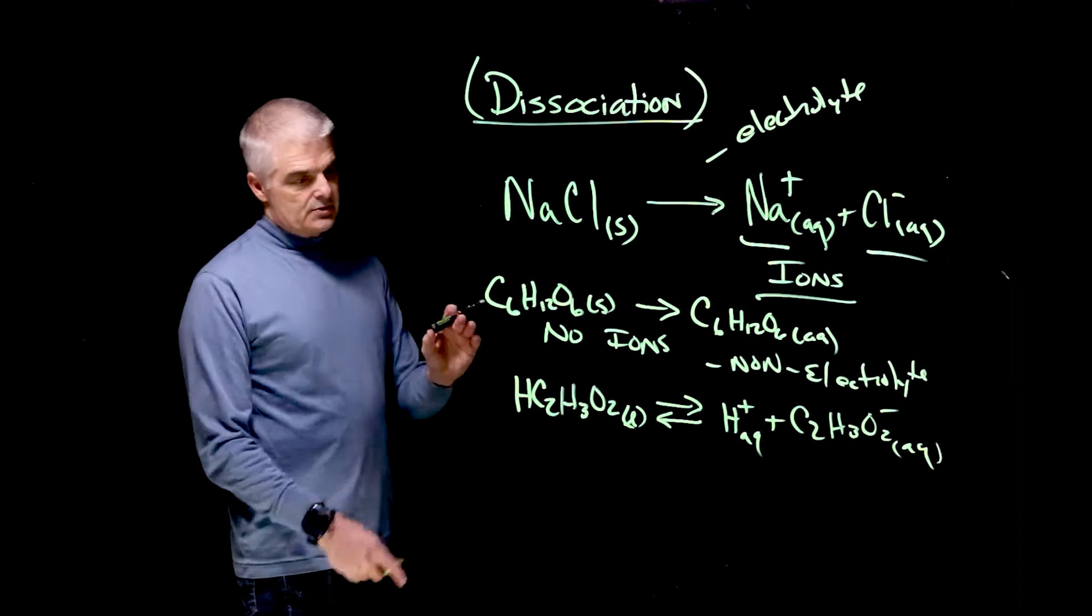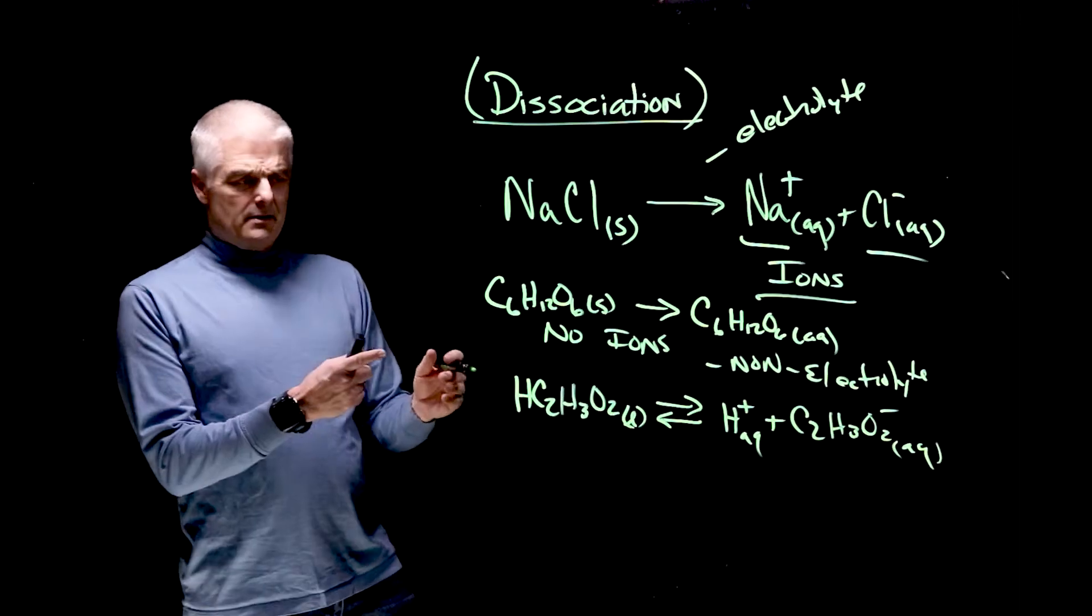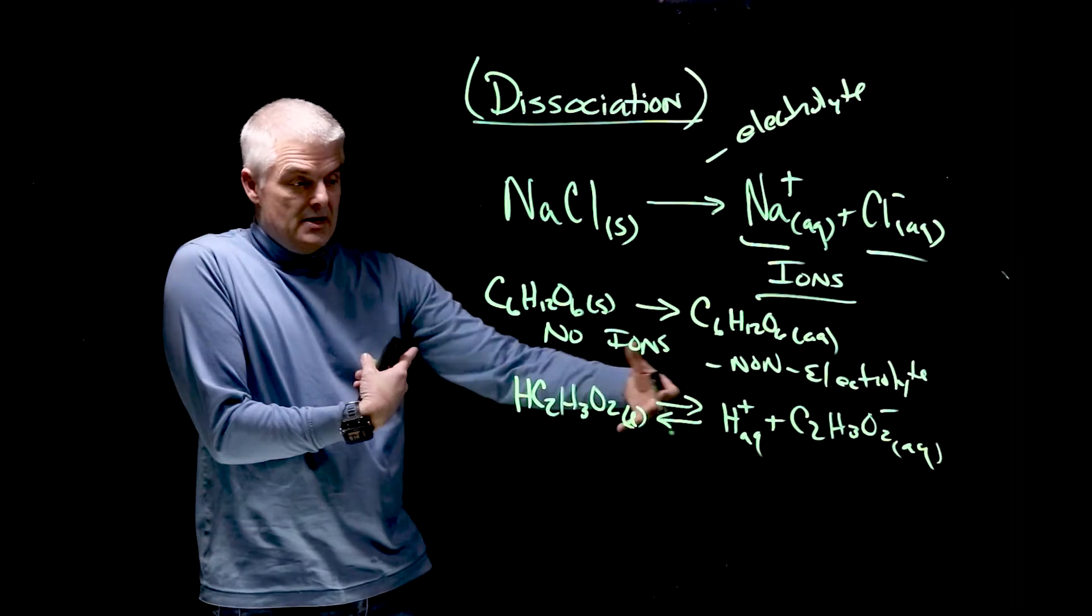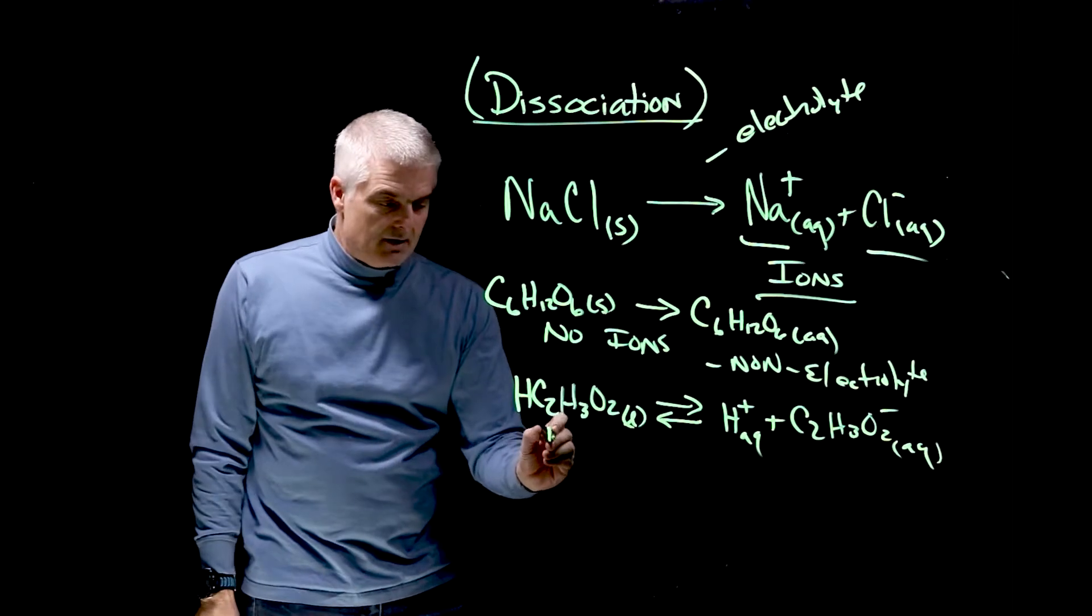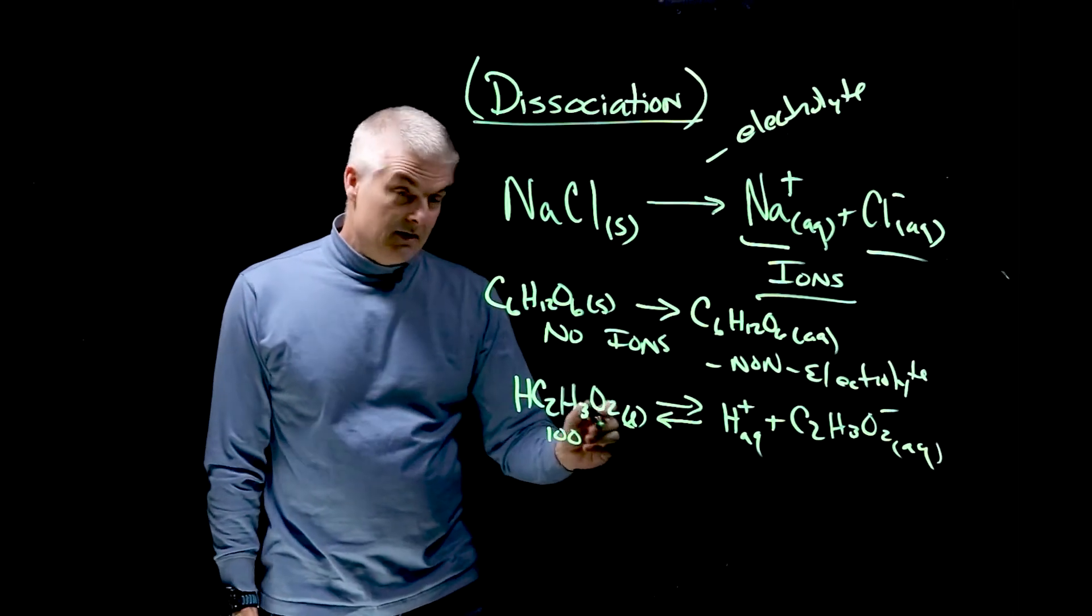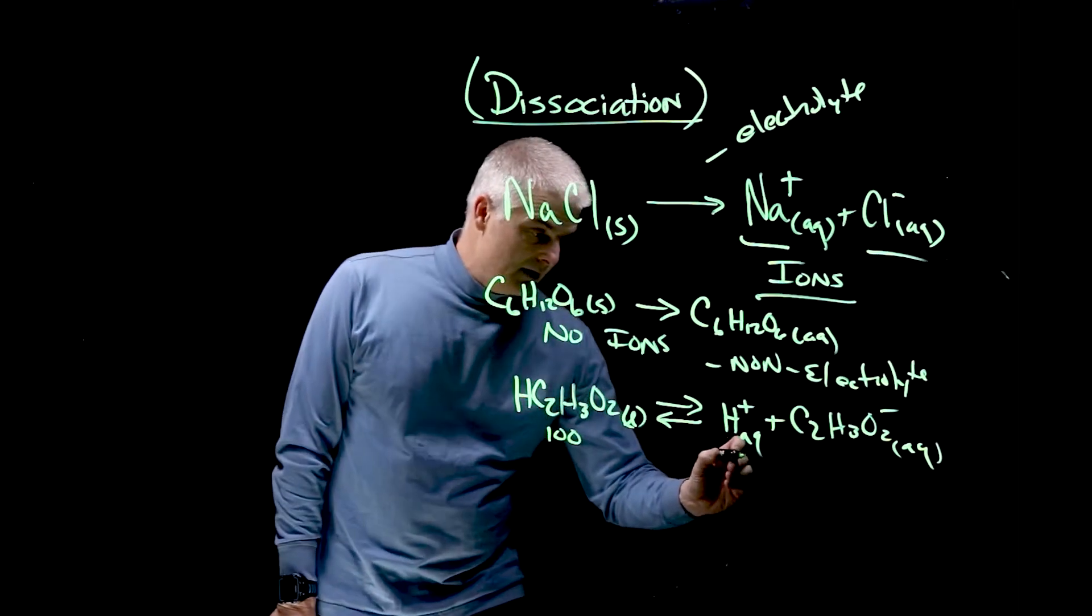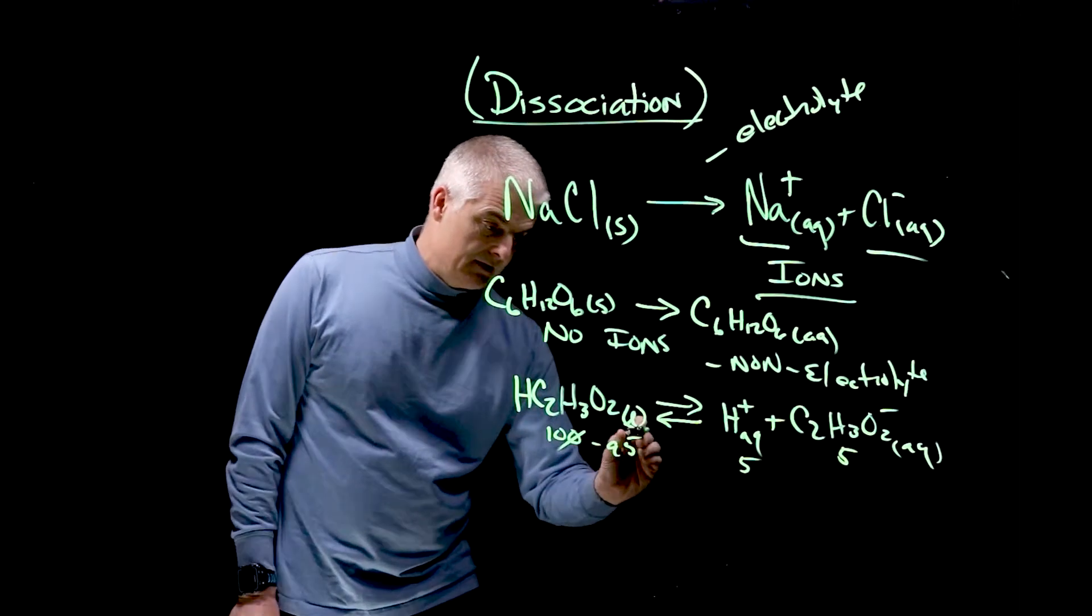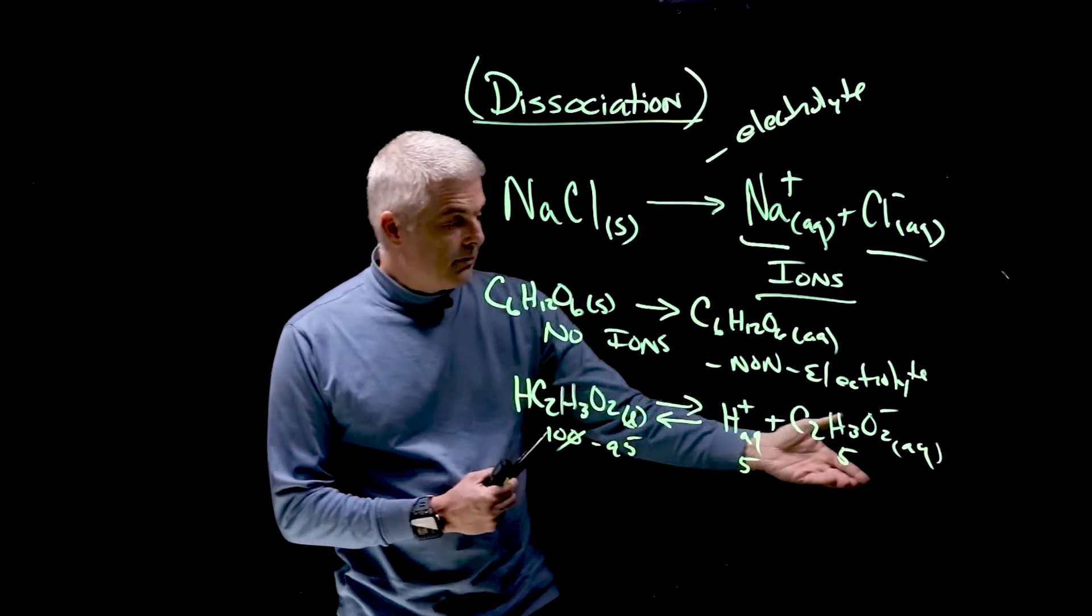Now what's going on with that? This is an interesting thing. What's up with a double arrow? That means that only some of them break apart. So for example, let's say I had a hundred of these. It turns out it's about five of them, so about five percent of it breaks apart. So you'd make five of these and five of these, and of course this would come down to 95.